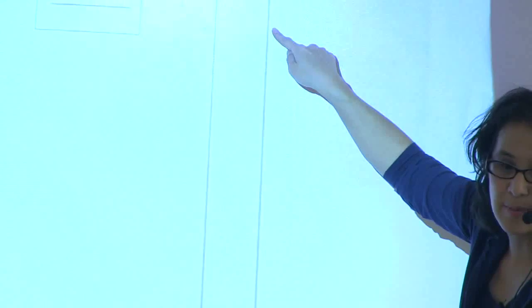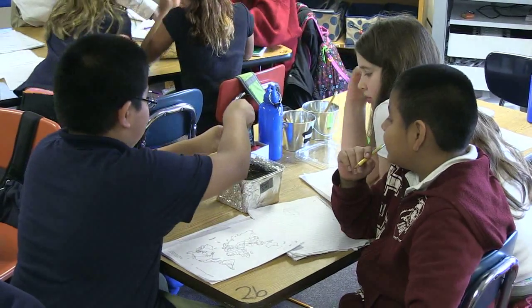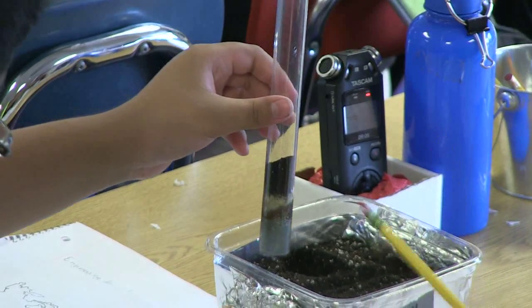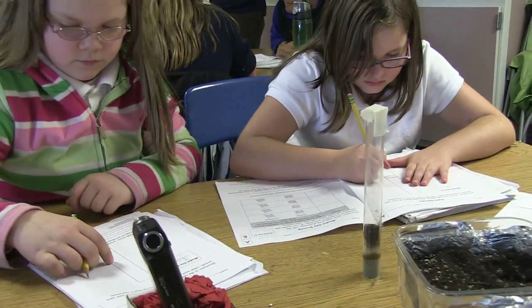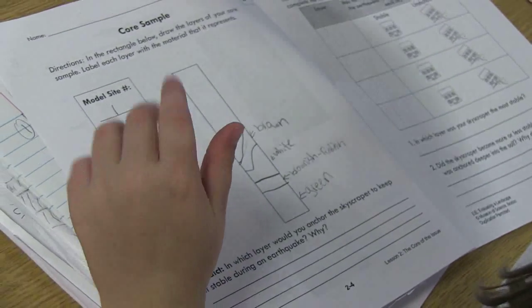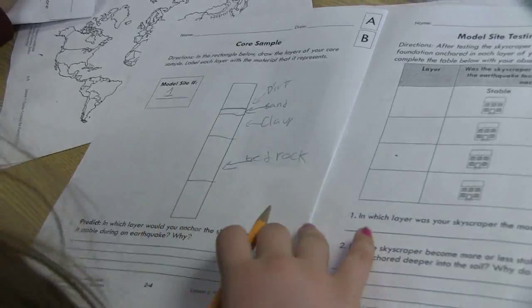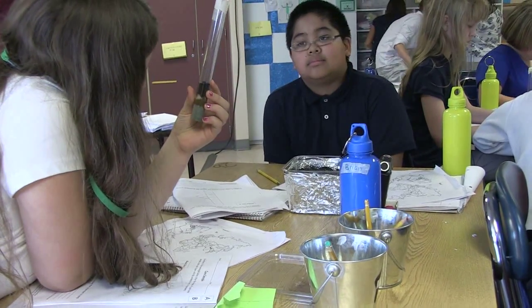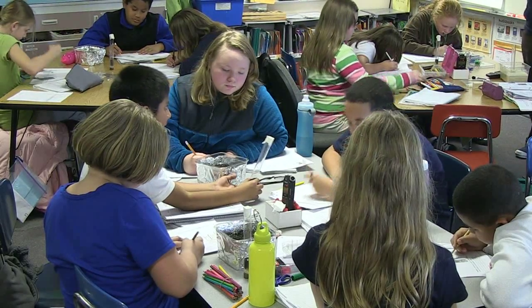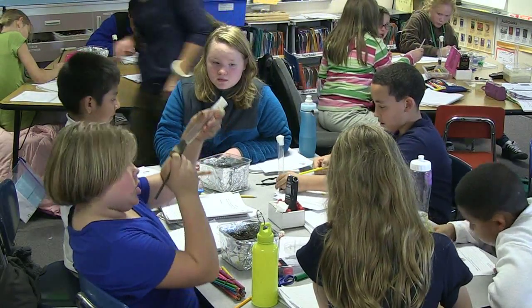Observe. Now I'm going to draw what mine looks like and label it. You're going to go get a bucket and diagram this on page 24. Ladies and gentlemen, are you looking carefully at your core sample? What about the texture of it? Are there little particles in it? Are there big particles? Is it smooth? The clay is smooth.